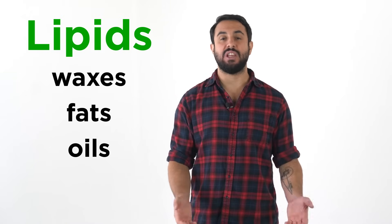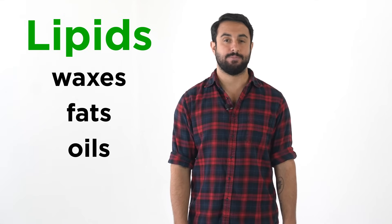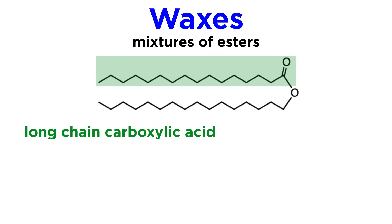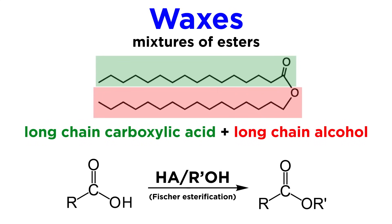Let's examine some examples of these types of molecules so we can talk about their most important properties. Waxes are mixtures of esters, which form from the combination of long-chain carboxylic acids and long-chain alcohols. Recalling the process of esterification, whereby a carboxylic acid and an alcohol can produce an ester, this is precisely what we are talking about here, except that both the carboxylic acid and alcohol involved have very long carbon chains, so when they combine, they produce an ester with an even longer carbon chain.